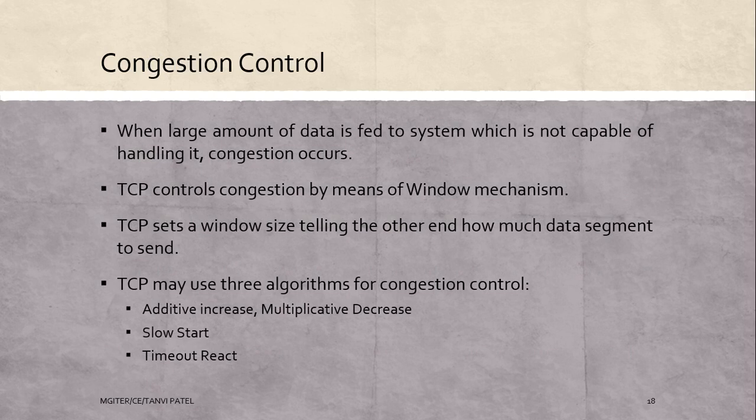Next is congestion control. When a large amount of data is fed to a system which is not capable of handling it, congestion occurs. TCP controls congestion by means of a window mechanism. TCP sets a window size telling the other end how much data to send. TCP may use three algorithms for congestion control: first is additive increase multiplicative decrease, second is slow start, and third is timeout react.